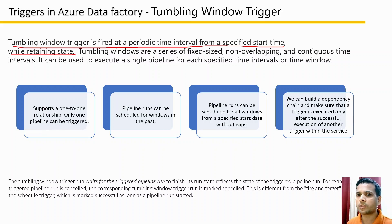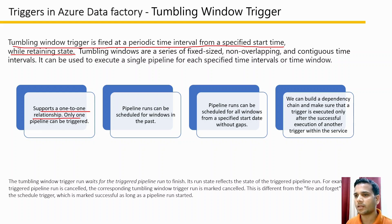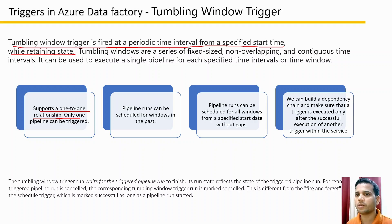The first distinguishing property is that tumbling window trigger supports a one-to-one relationship only. As we discussed with schedule-based triggers, one schedule trigger can execute multiple pipelines and vice versa. However, in the case of a tumbling window trigger, one trigger can execute only one pipeline — it is a strict one-to-one relationship.